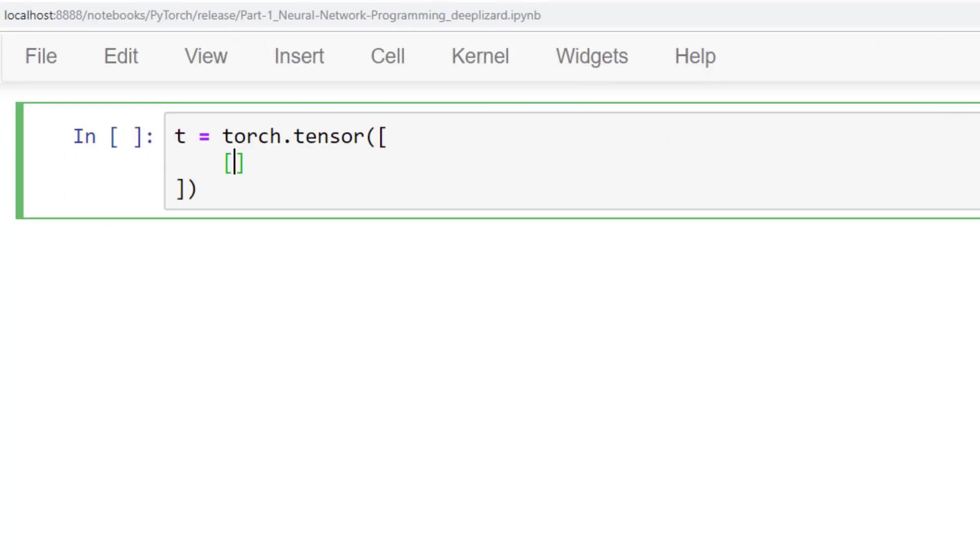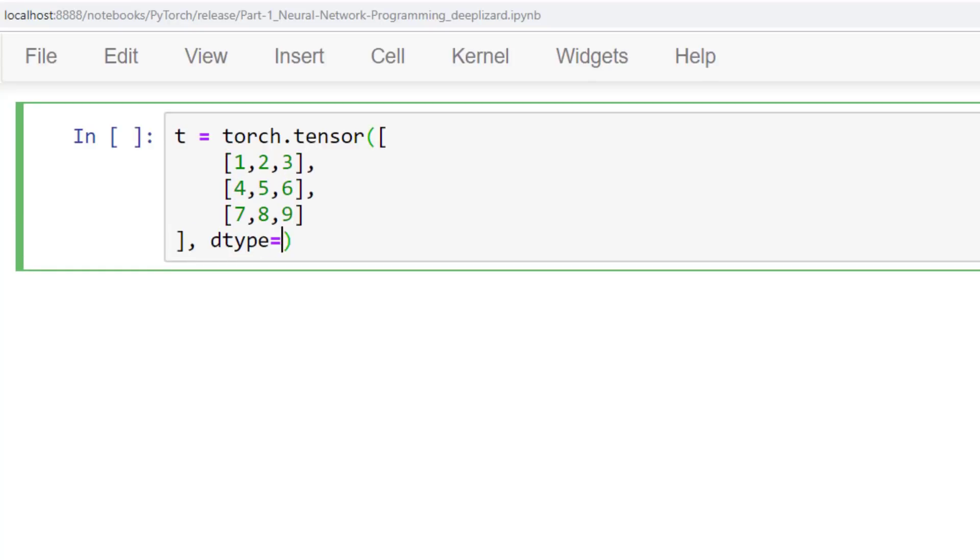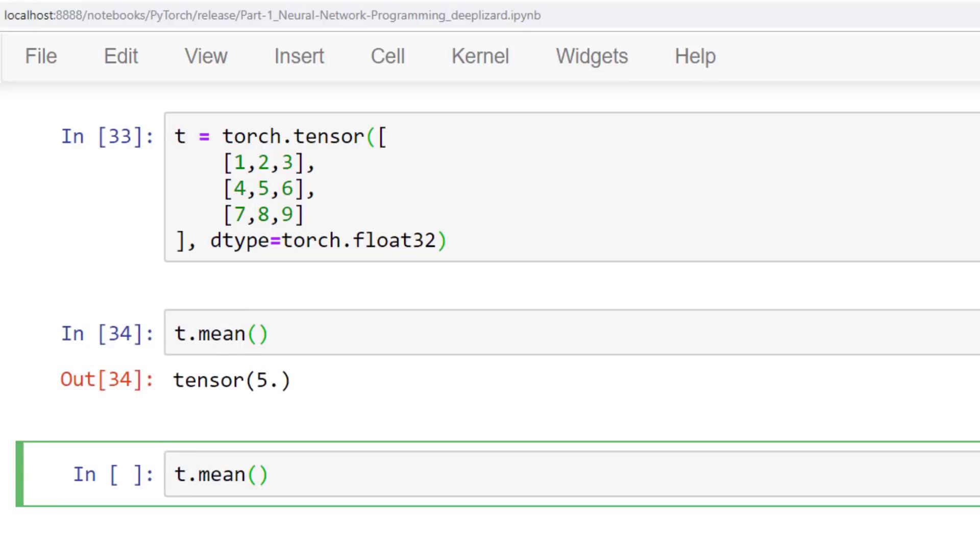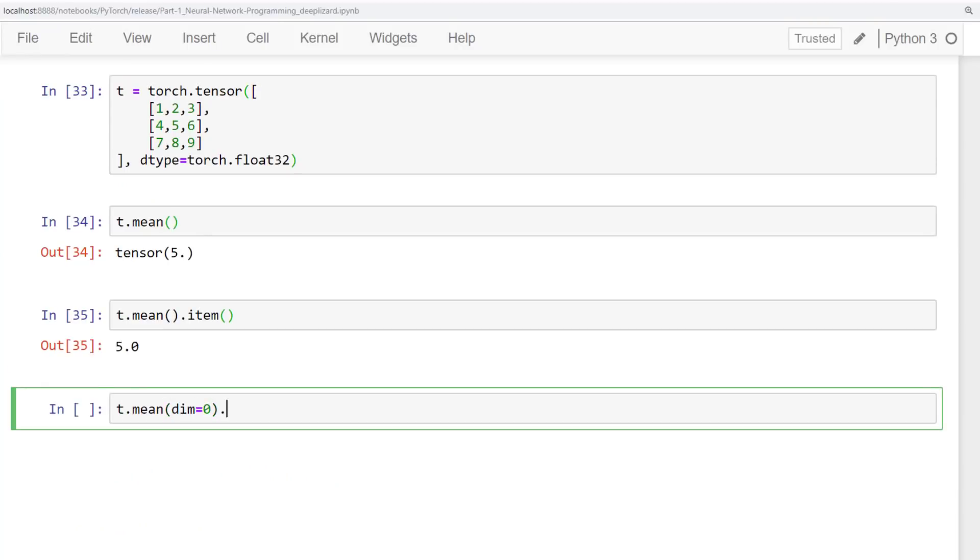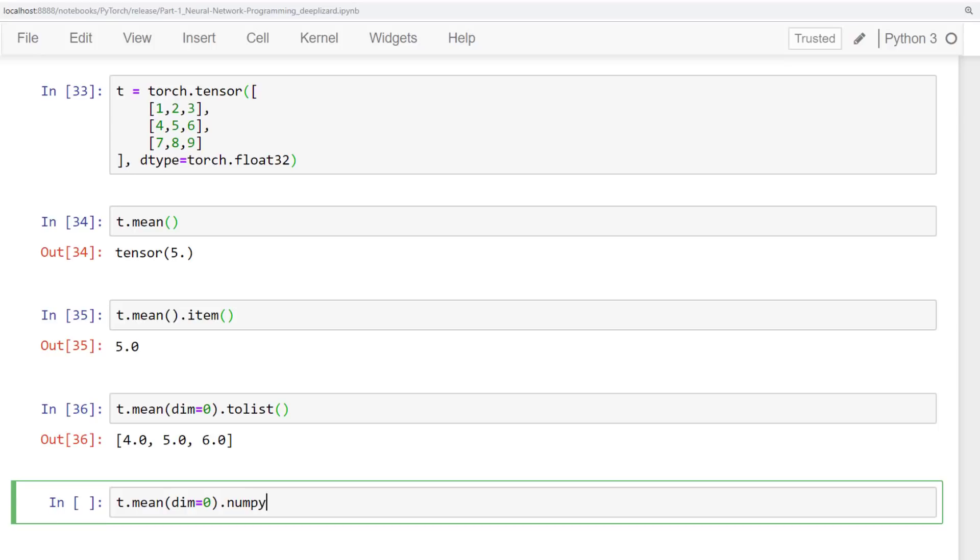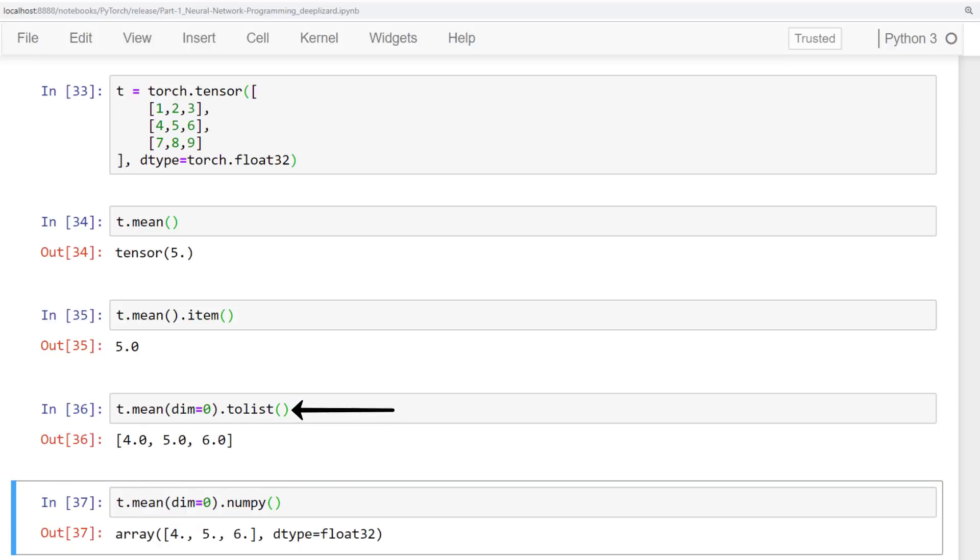Let's look at access now. Suppose we have the following tensor. When we call the mean on the three by three tensor the reduced output is a scalar value tensor. If we want to actually get the value as a number we can do it using the item tensor method. The item tensor method only works with scalar value tensors. Have a look at how we can access multiple values within a tensor. When we compute the mean across the first axis multiple values are returned and we can access these numeric values by transforming the output tensor into a Python list or into a NumPy array.